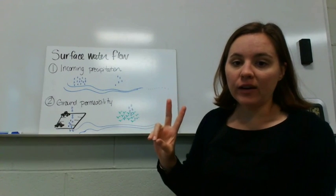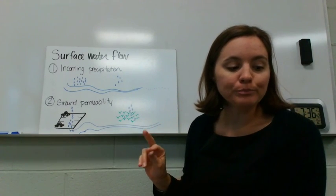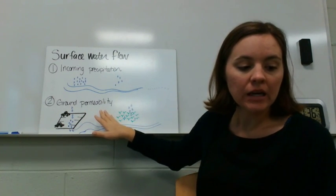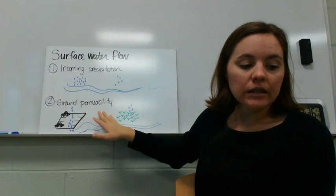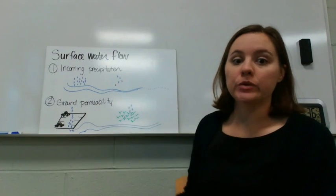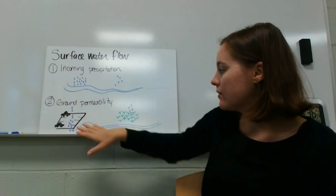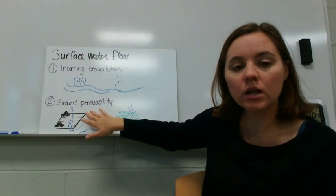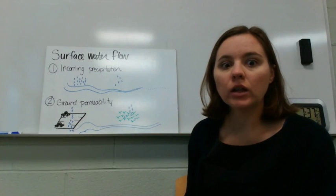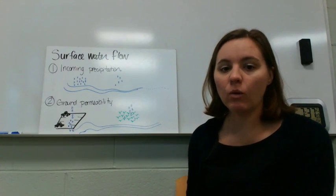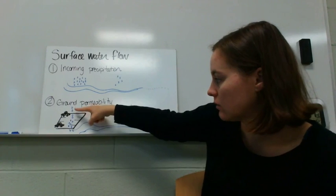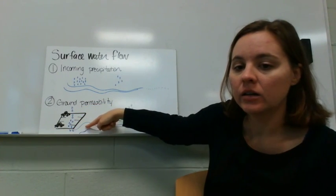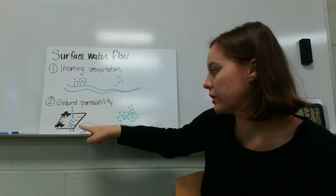The second thing that can affect surface water flow and volume is the permeability of the ground. Permeability is the ability of liquids to pass through something. So if we have something like a parking lot or hard clays or solid rocks, they're very low in permeability so water cannot pass through them. So it's just gonna run straight down and into the stream, and we're gonna have higher surface water volumes in these situations when it rains.